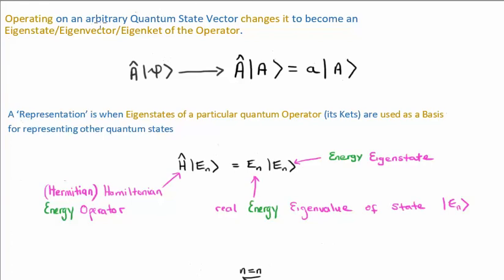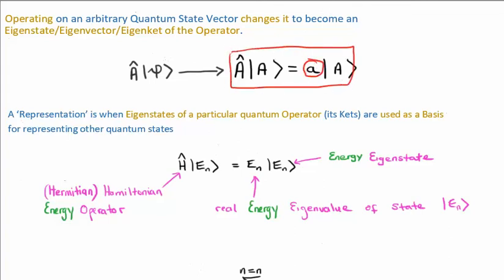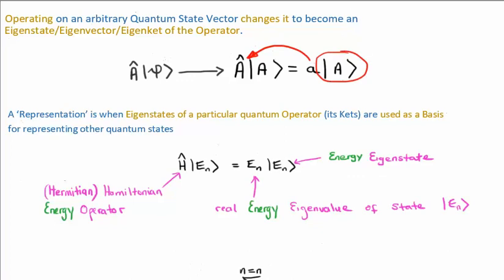If you operate on an arbitrary quantum state vector, the quantum state vector is going to change — it's going to collapse, or project onto the eigenstates of the operator. So let's say we have an arbitrary quantum state vector psi, and we operate on it with our operator. Initially, psi is not in an eigenstate of the operator, and if that's the case, then it must change. It collapses into an eigenstate, or eigenket, or eigenvector of the observable A, and we get the associated eigenvalue equation. In this case, the eigenvalue we're looking for is small a.